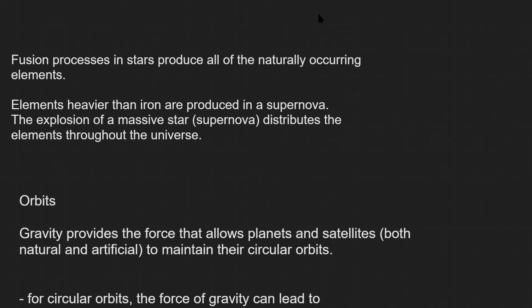A couple of important points: fusion processes actually produce all the naturally occurring elements. So all the chemical elements are produced within fusion. For instance, at the most basic level, hydrogen will fuse into helium and so on upwards in the periodic table. The very heavy elements, though — there's not enough energy for this to happen, so they tend to occur in supernovae explosions.